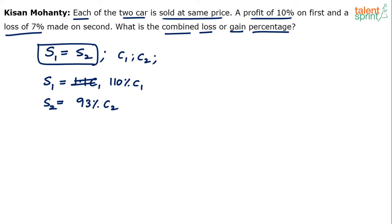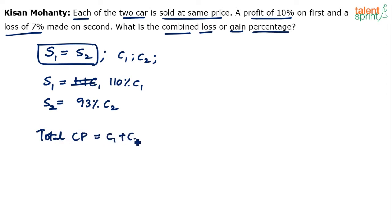What is he asking us to find out? Combined loss or gain percentage. To find that, we need to find out the combined cost price and the total selling price. Total cost price is C1 plus C2, and total selling price is S1 plus S2. Do the calculation after that.